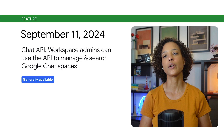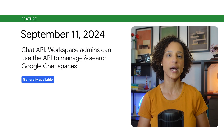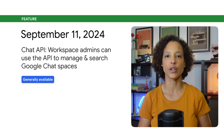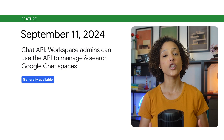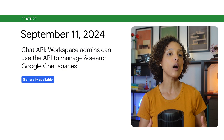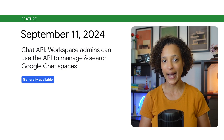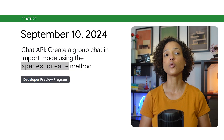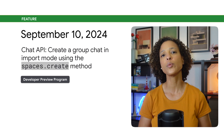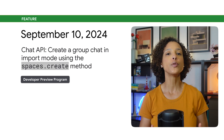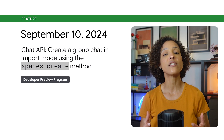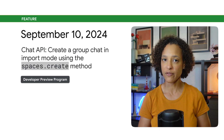Google Workspace administrators can now call the Google Chat API to manage and search Google Chat spaces across their organization. This functionality lets them manage spaces at scale and automate common or repeatable tasks. If you're migrating to Google Chat from other messaging platforms, you can now create a group chat in import mode using the spaces.create method. This feature is available through the developer preview program.